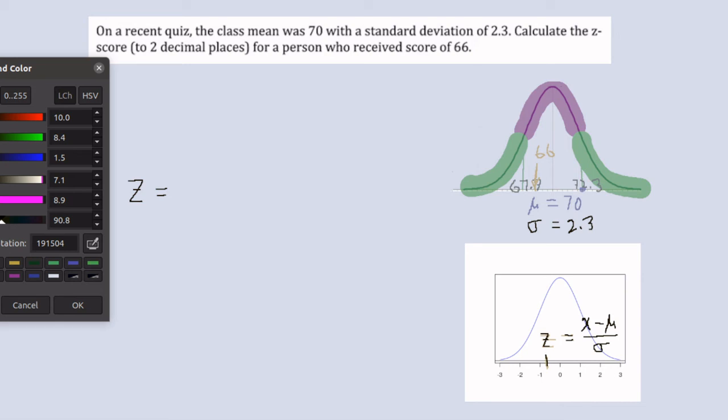Our z-score will be 66 minus 70 all divided by 2.3, and now that'll just be an easy calculation either as a command in R or on any calculator.